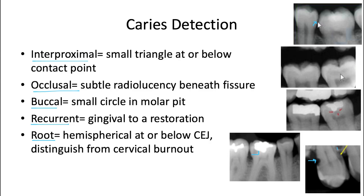With cervical burnout, you can still clearly trace the outline of the root. So unlike root caries where the root seems to disappear, with cervical burnout we can still trace it, and even though there's a shadow there, we can be confident that it is not a caries lesion.